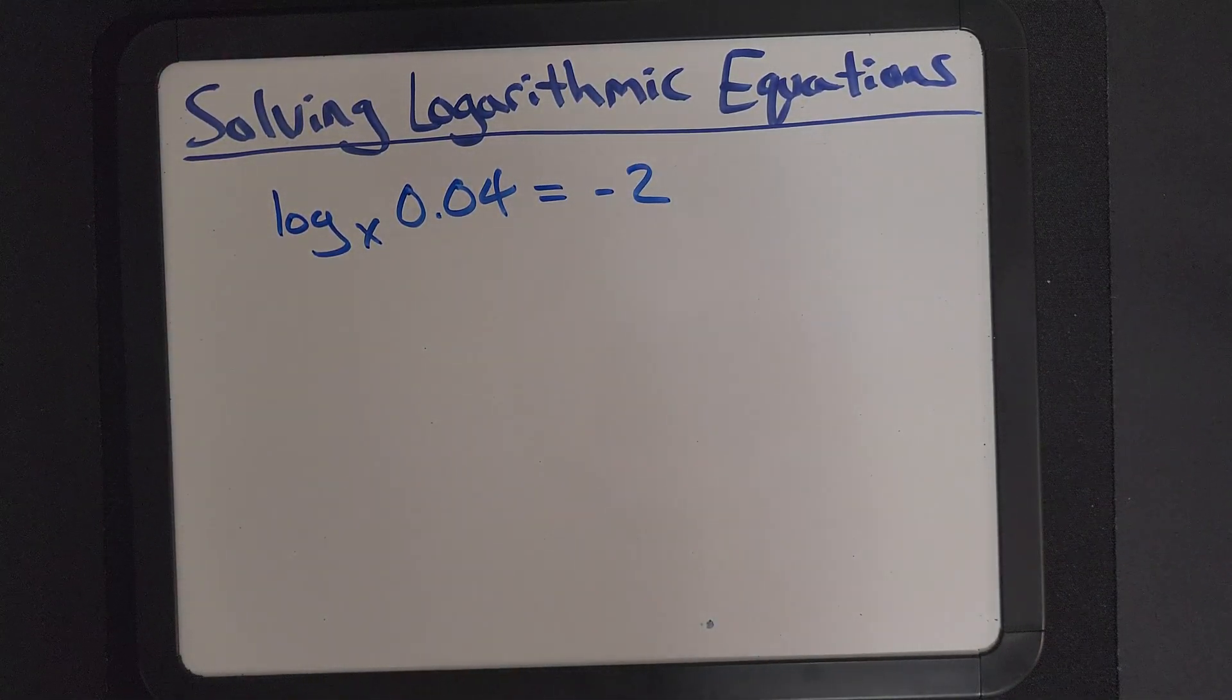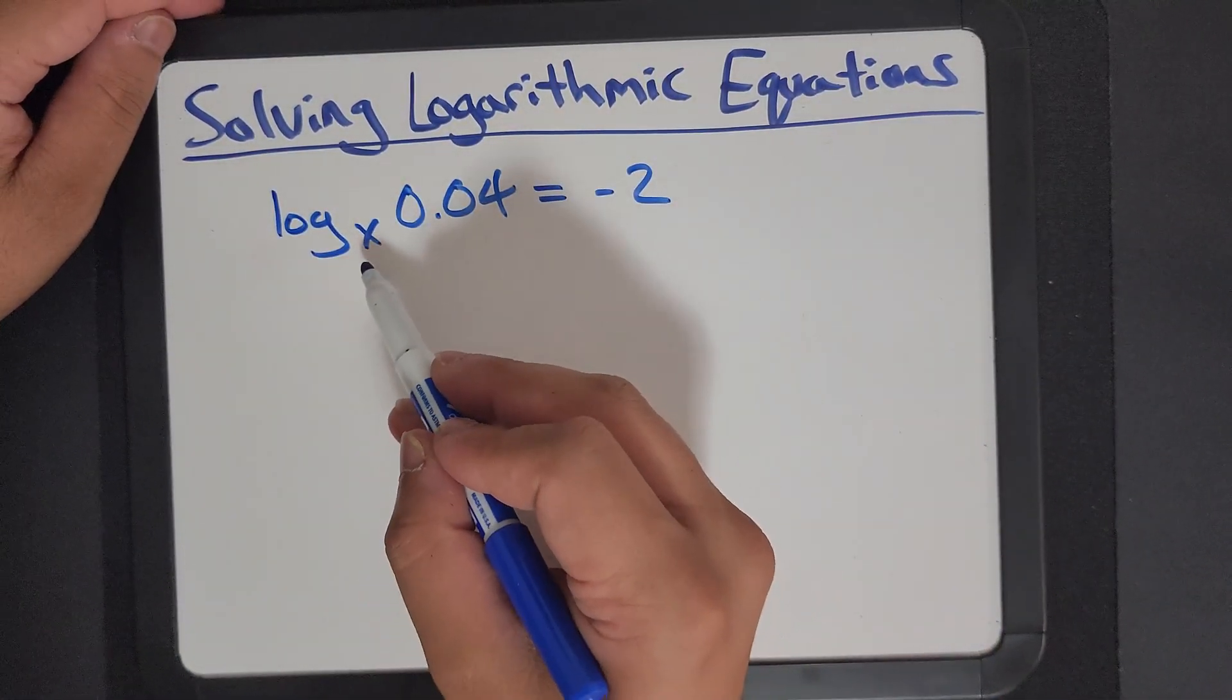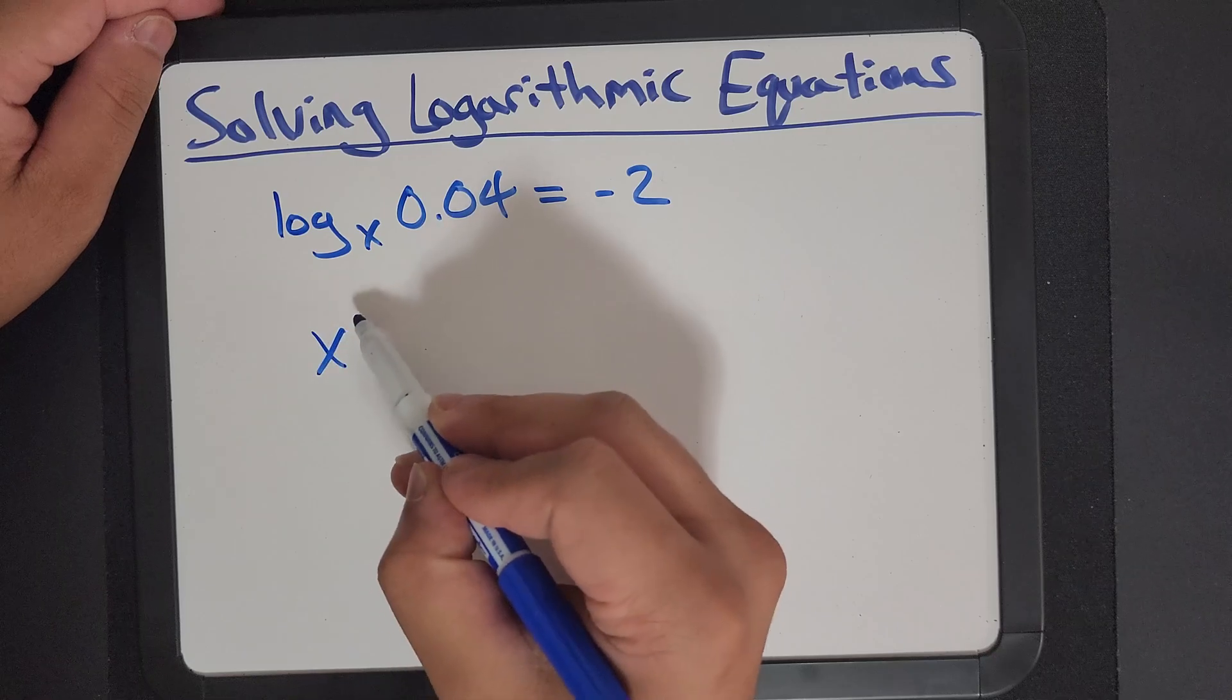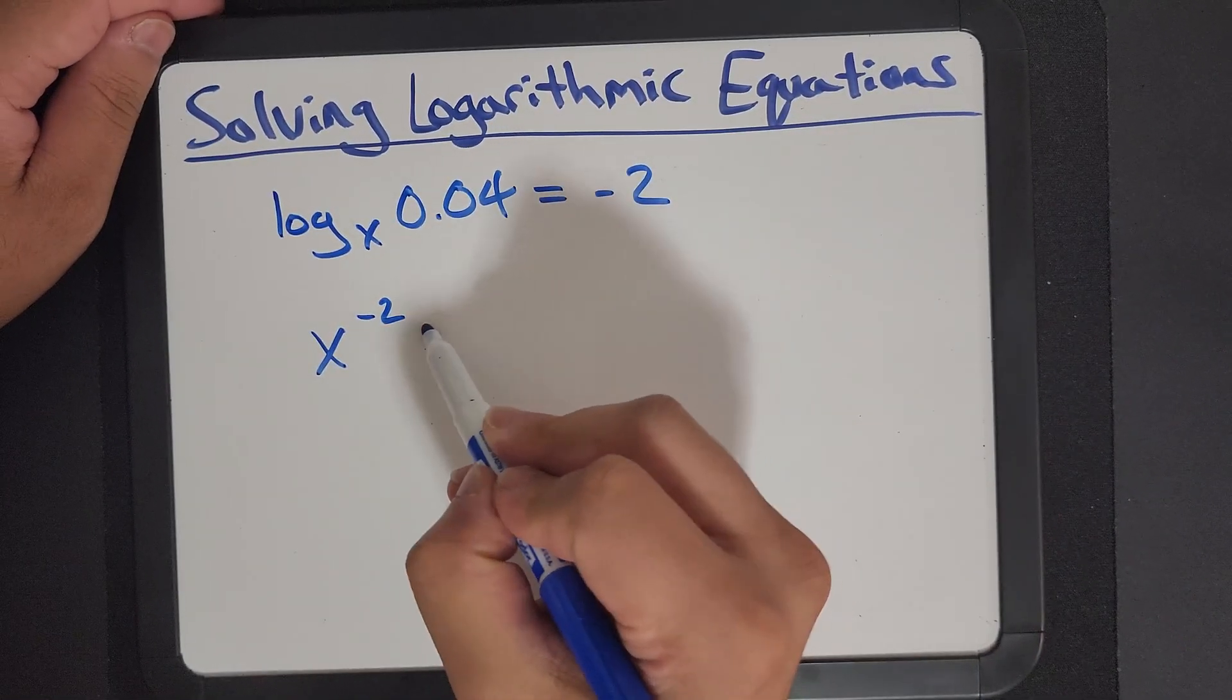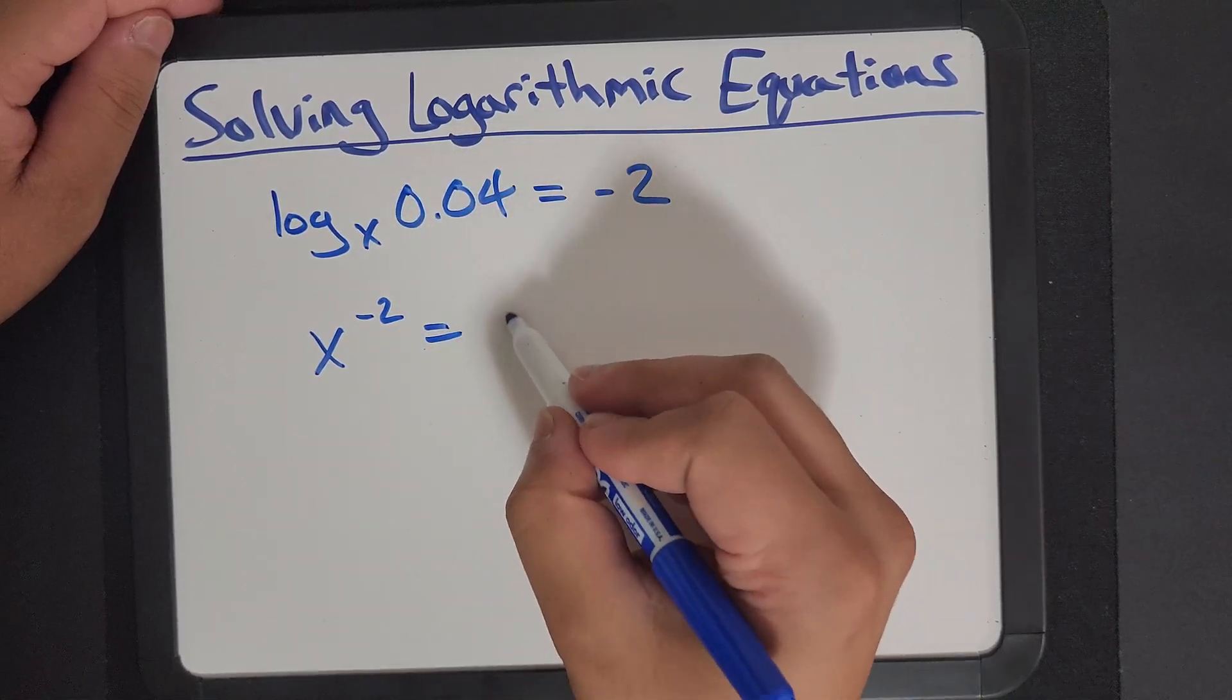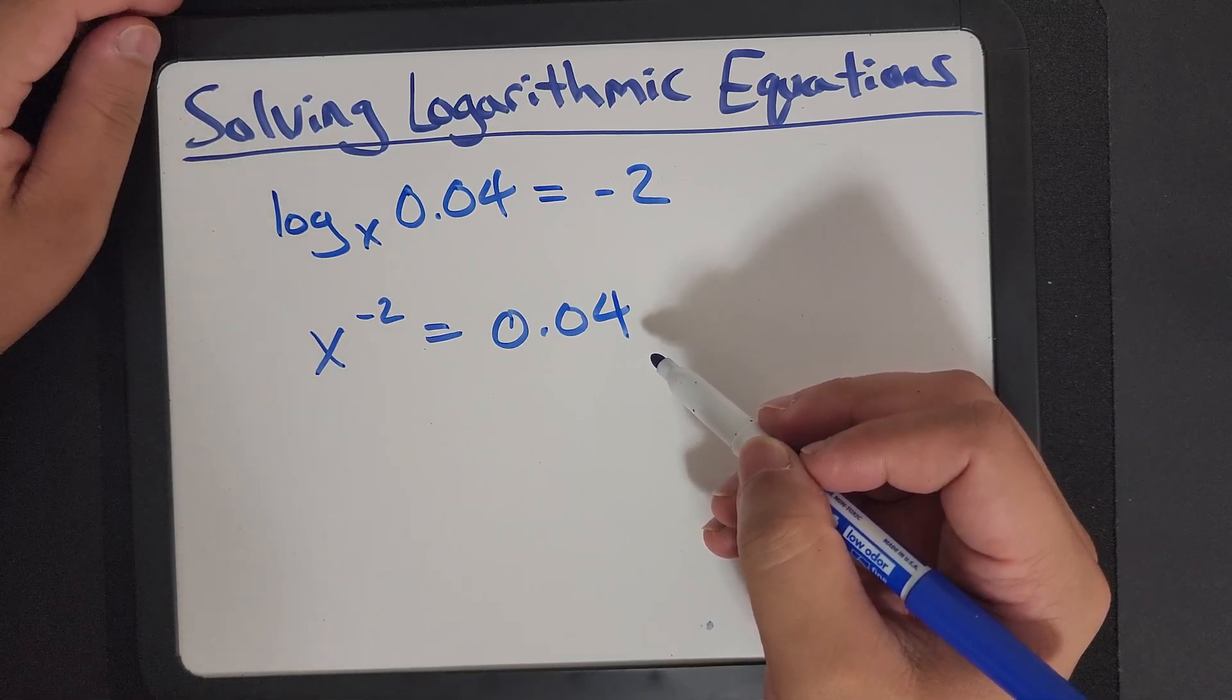Let's start with an example. Say we have log base x of 0.04 equals negative 2. So let's rewrite this in a way that we know. We know that the base to the power of this is equal to that. And so, what is that going to give us?